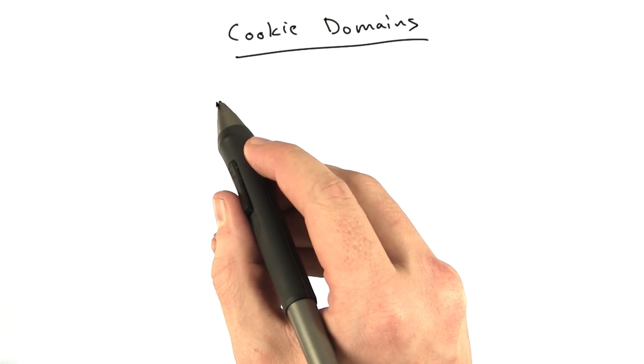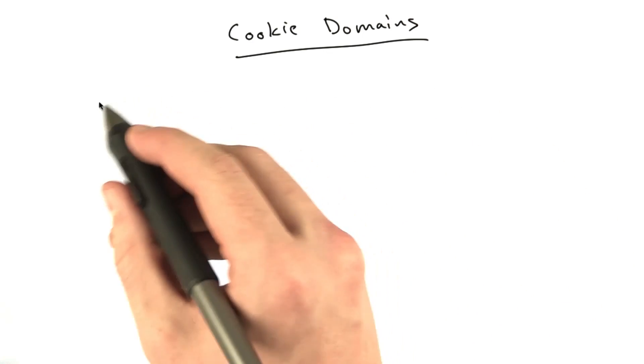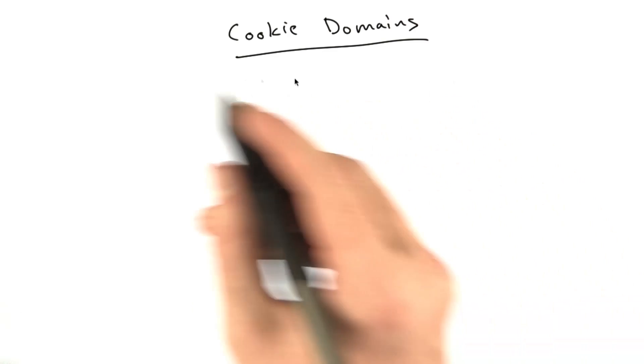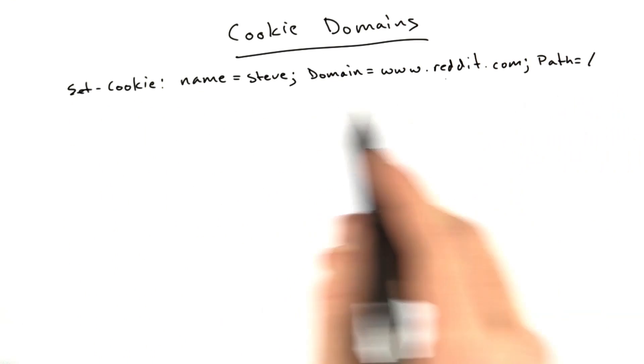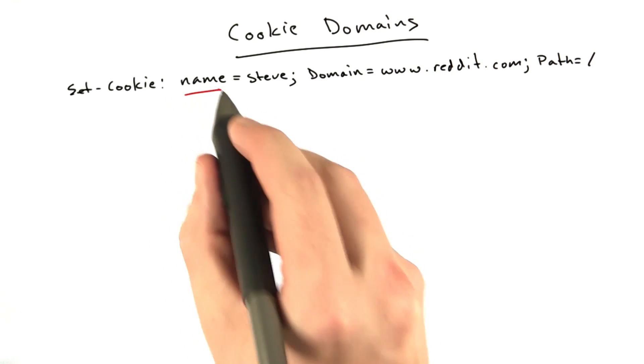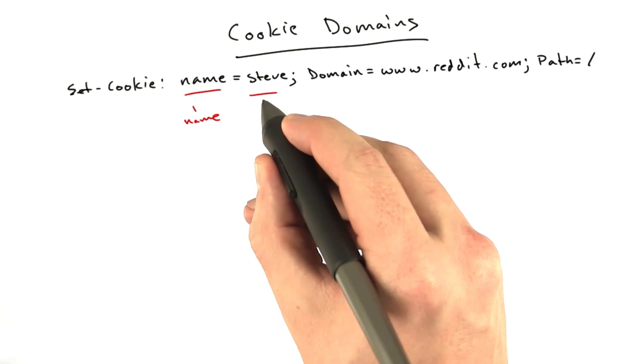As we saw in the demos, cookies can have extra parameters, not just the value. Let me draw an example cookie for you. Here's an example Set-Cookie header for setting this cookie whose name is name—nice and confusing—whose value is Steve.